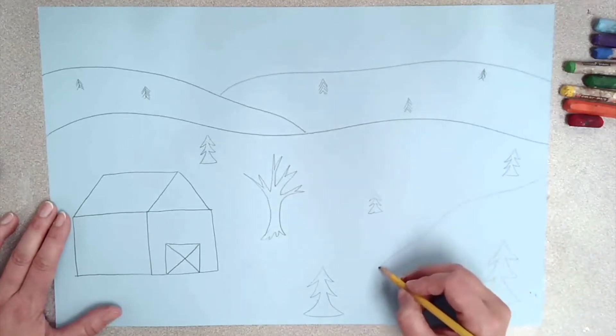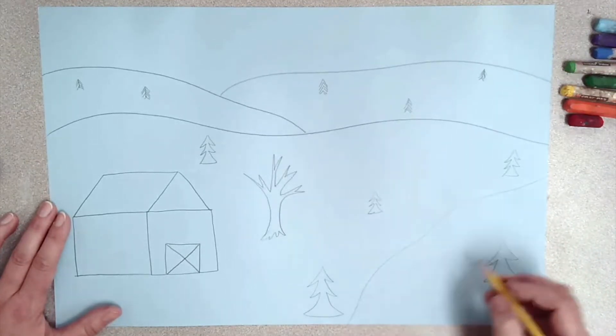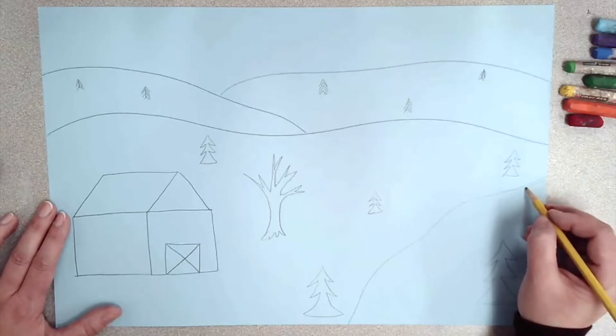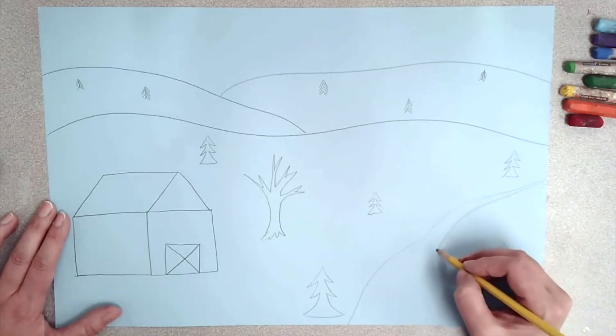I added a road or a path going through my picture so that my horse-drawn sled would have a path to ride on.